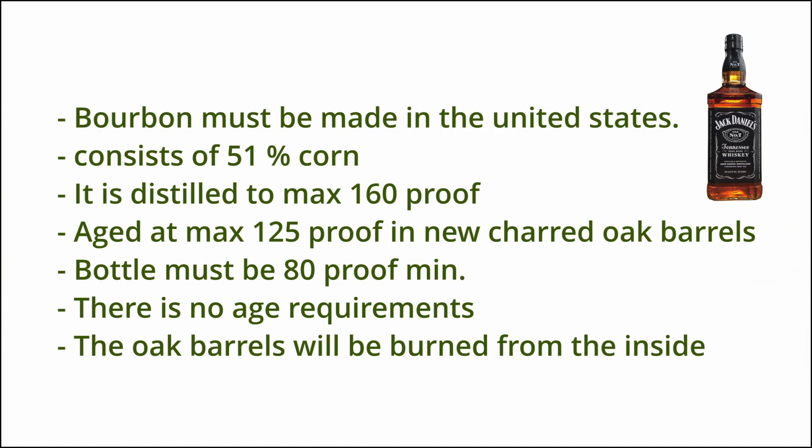Bourbon must be made in the United States and should consist of at least 51% corn. It is distilled to a maximum of 160 proof, or 80% alcohol, and aged at a maximum of 125 proof in new charred oak barrels. The bottle must be a minimum of 80 proof. There is no age requirement.